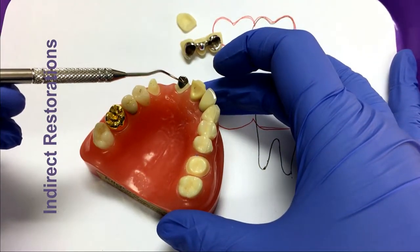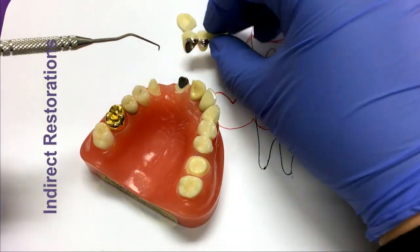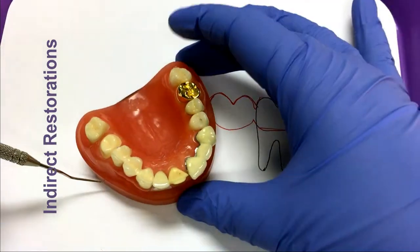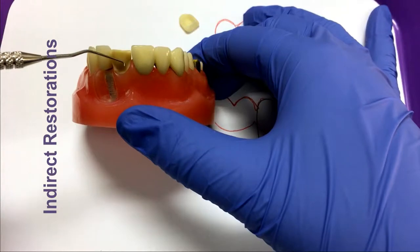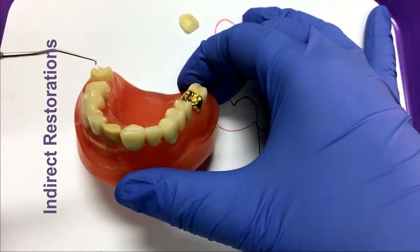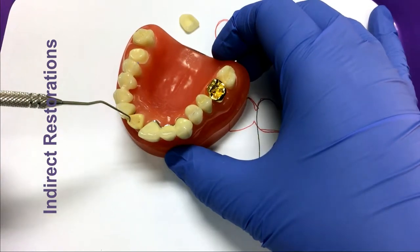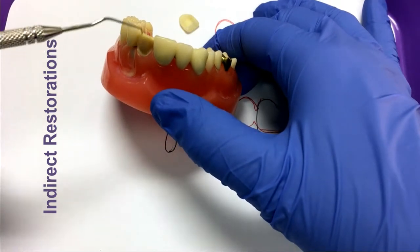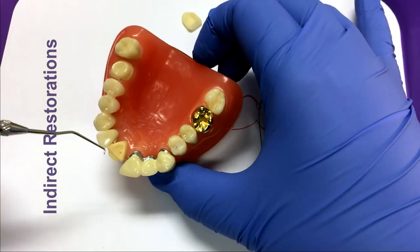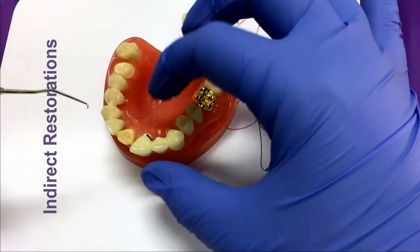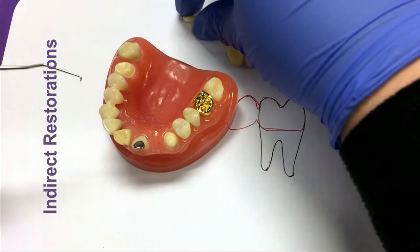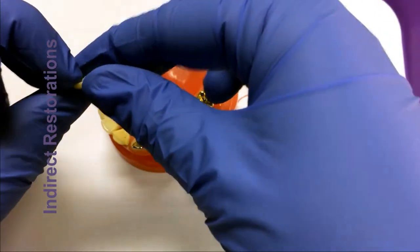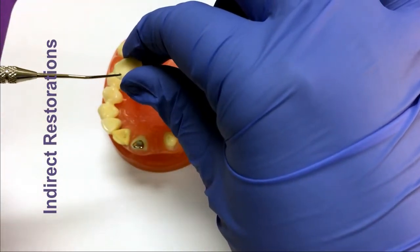The next restoration is a veneer. Veneers are typically porcelain or ceramic. They replace the facial, incisal, and sometimes a portion of the lingual surface of the teeth. So this is what your veneer looks like. There's no metal on the veneer. It's cemented just like a traditional crown or bridge. Because it doesn't have any metal on it, it's a much more aesthetic, nicer looking option for the patient.